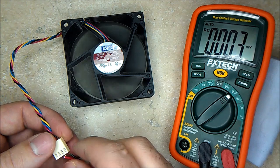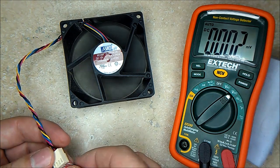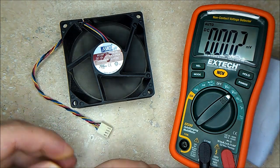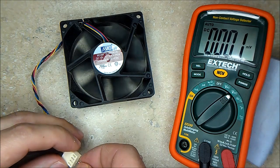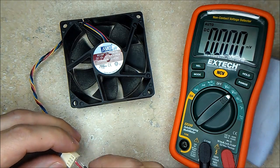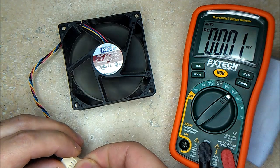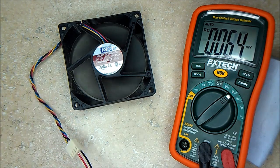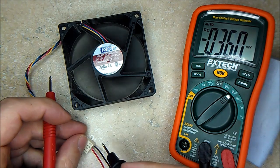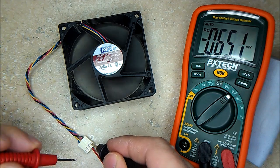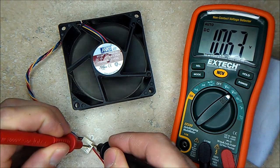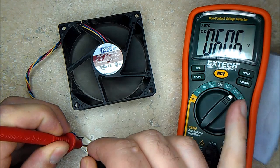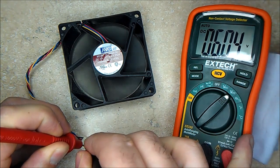Now if we were to measure the voltage on this. Again, the black probe on the black cable, red probe. And what do we have? We got 6.6 volts right here.